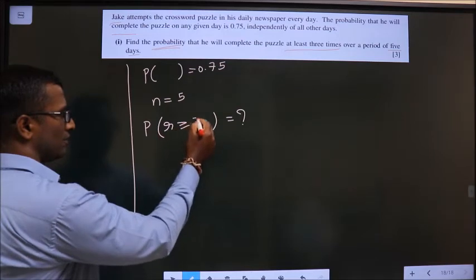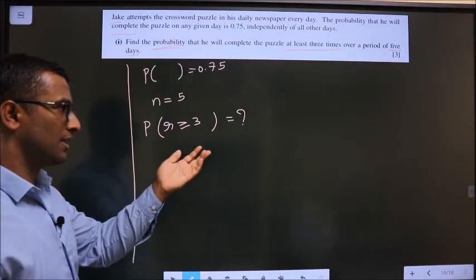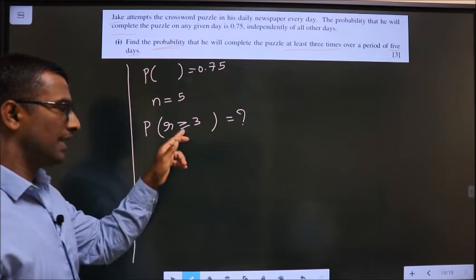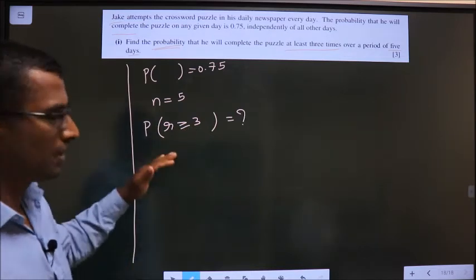And mathematically how do we represent it? In this way: r greater than or equal to 3. At least 3 means 3 or more than 3. You should include 3, that is why you should put the equal to symbol also.